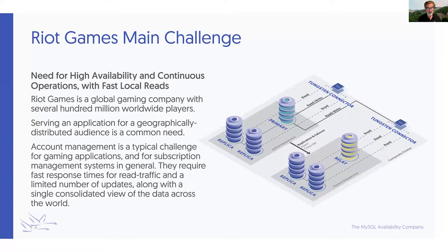The main challenge with Riot Games was about availability, continuous operation, and fast local reach. Think about being a game player in Europe wanting to access the game — you do not want to access a server sitting in US West just to log in quickly. The deployment has one primary cluster and, in Riot Games' case, three relay clusters. The primary cluster where all account management information is updated sits in US West, and then US East, Europe, and Asia Pacific each have their own cluster for fast local reads. When there are changes to player information, those get updated in US West and then propagated back to local systems.